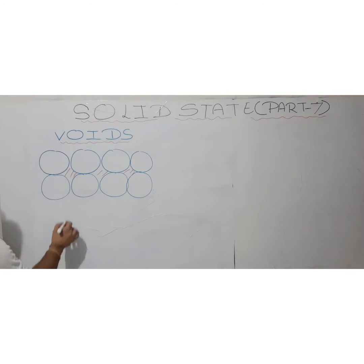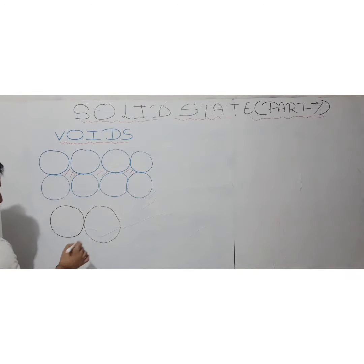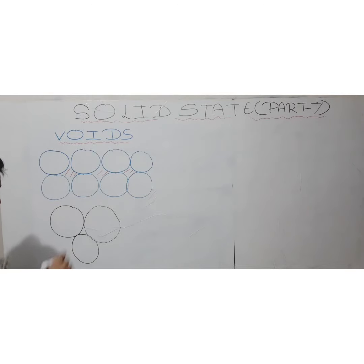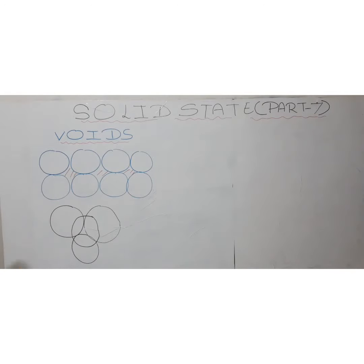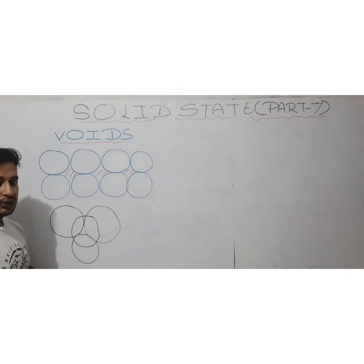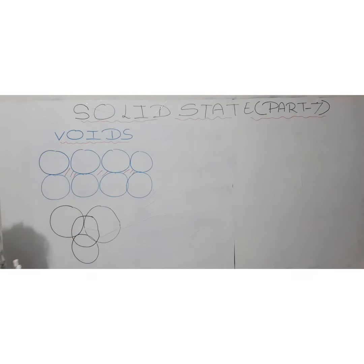For example, consider spherical particles present in a packing arrangement. As it is three-dimensional, during packing one sphere will come and occupy a position over the empty space. This empty space, which was left, gets covered by one of the spheres — the particle forming that solid — resulting in a special type of structure.